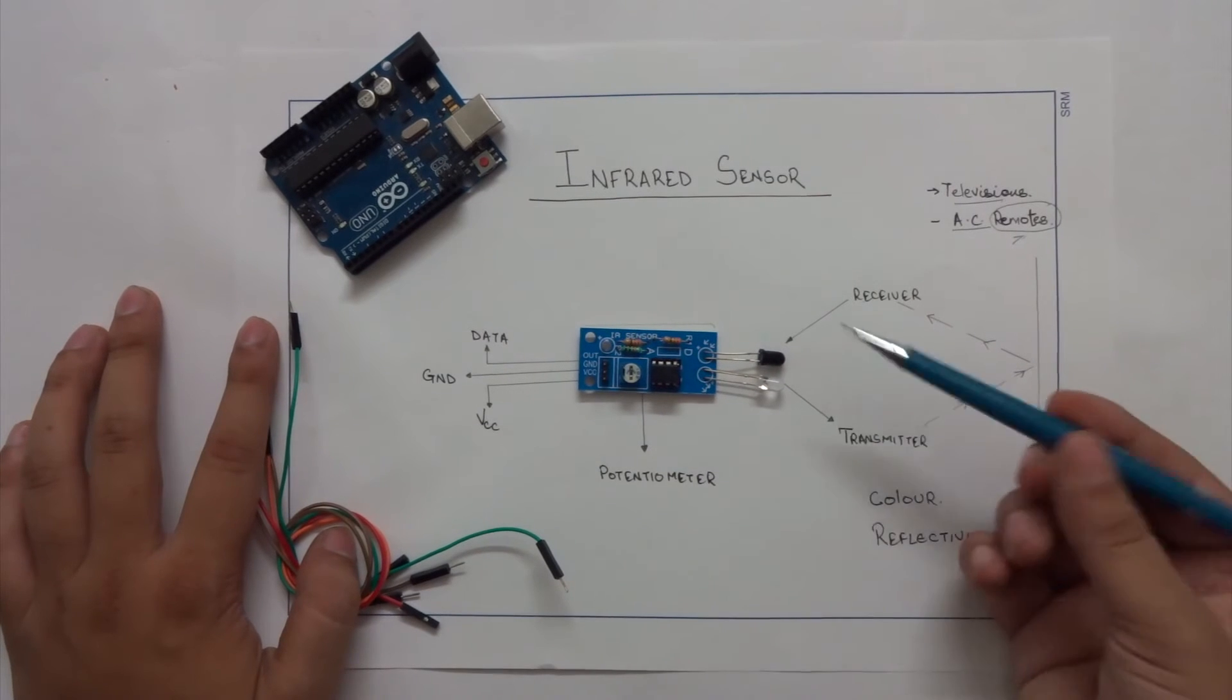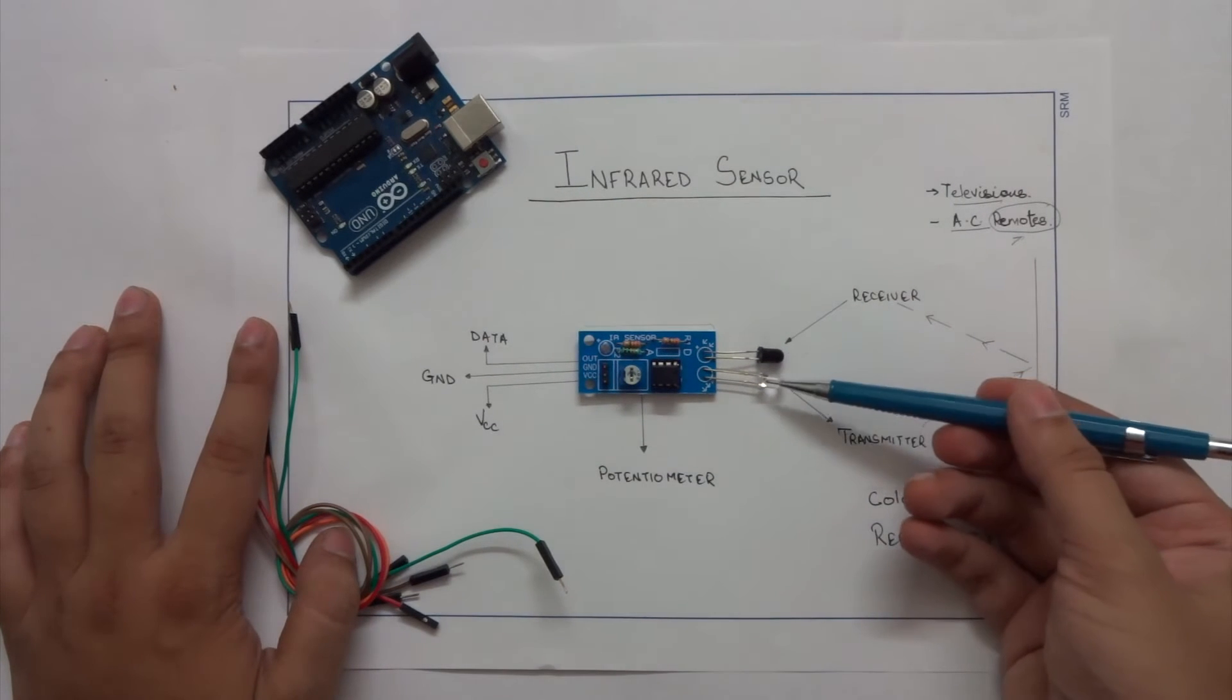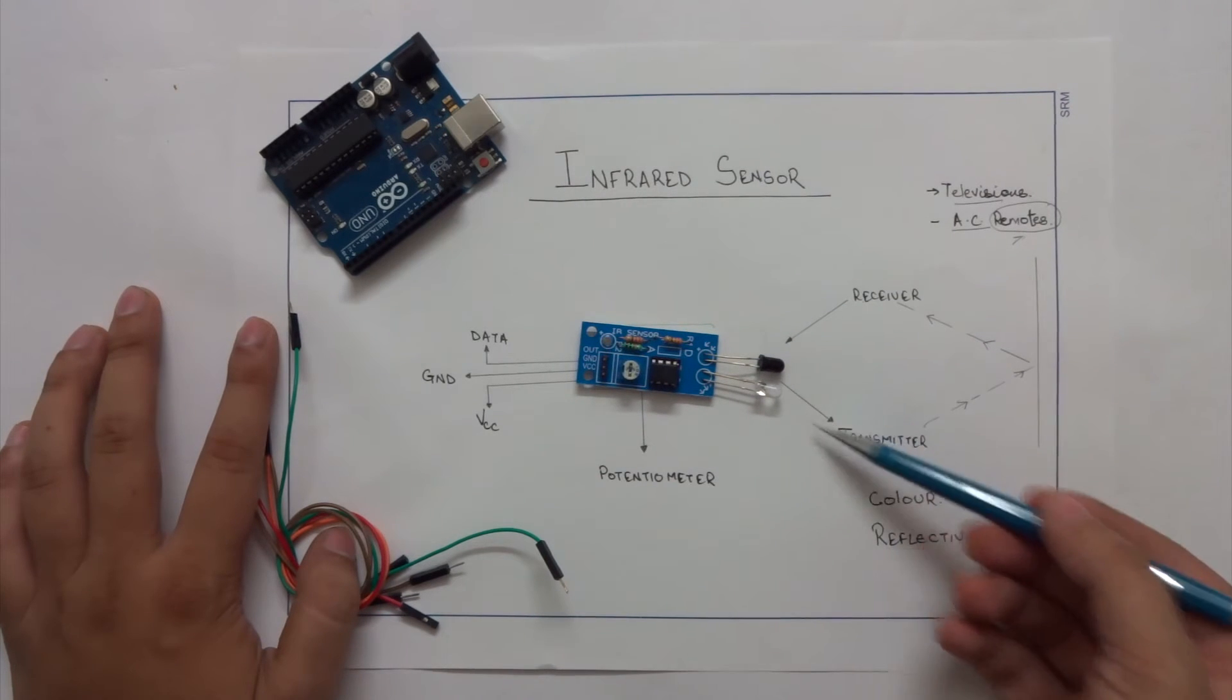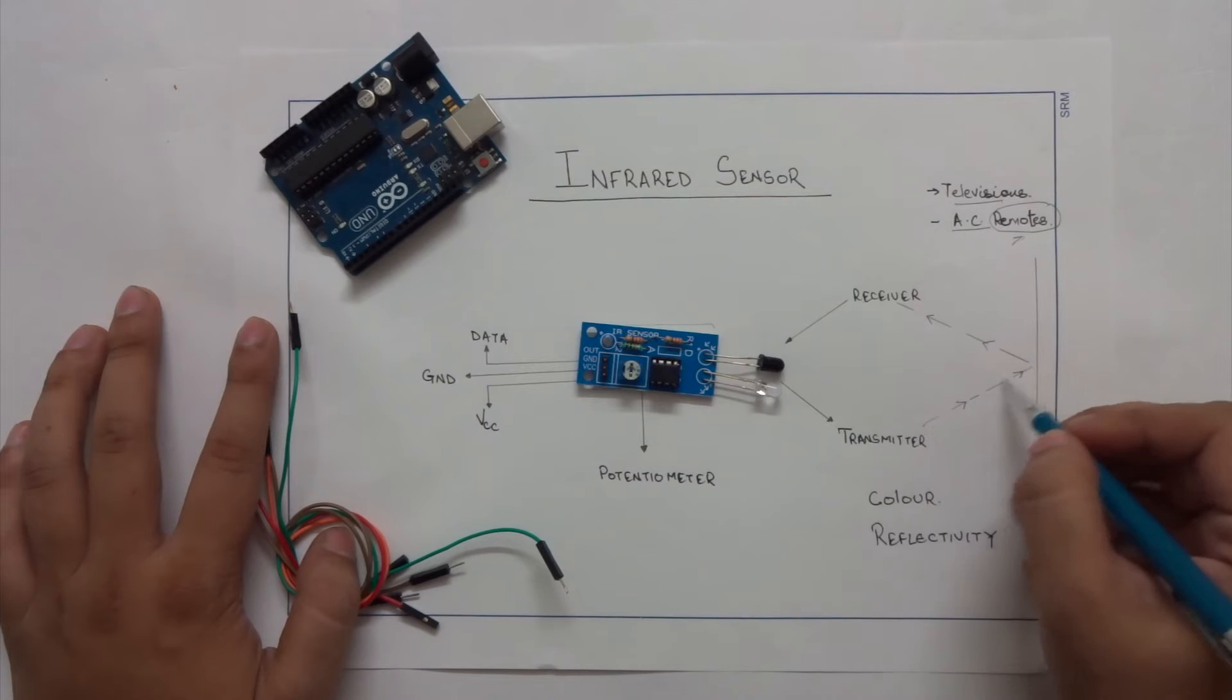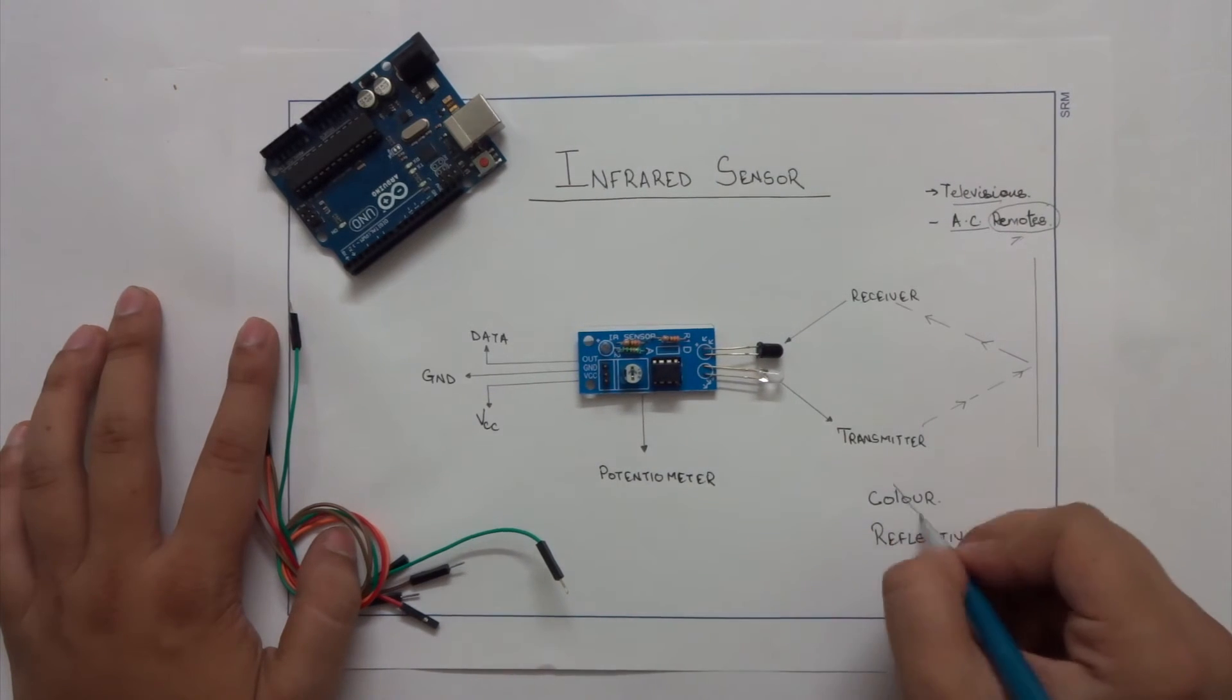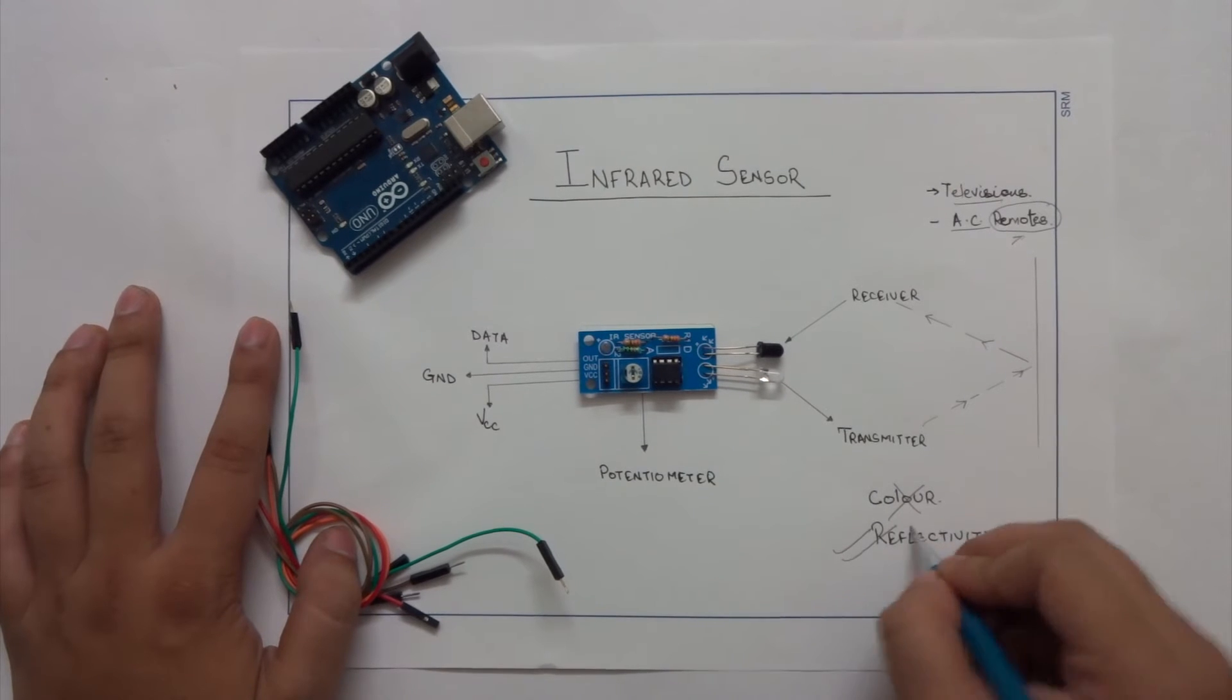We see that it is comprised of two LEDs among which one being the transmitter LED and the other being the receiver. So the transmitter LED transmits infrared rays and the other one receives them. These sensors don't actually detect the color, they have more to do with reflectivity.